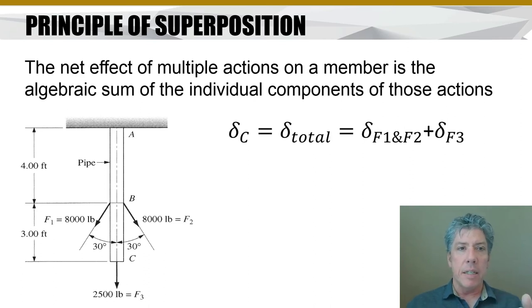Now, the idea behind superposition is that the 2,500-pound load does not affect the 8,000-pound loads, either one. They don't affect each other, and they don't affect the 2,500-pound load. In other words, the way the material responds is just the sum of the way it would respond to all of those loads independently.